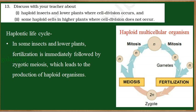Most multicellular organisms — higher organisms like plants and animals — have a diploid set of chromosomes, meaning 2n chromosomes. One set is received from the father and one set from the mother. This condition is called diploid cells. However, certain insects and plants have a haploid number of chromosomes, meaning they have only one set.